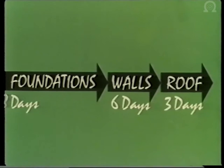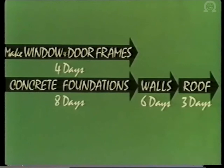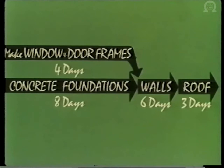Operations that can be done at the same time are shown by arrows alongside one another. When two or more operations must be finished before a third can start, they are drawn in this way. Arrow diagrams are the basis of critical path planning.